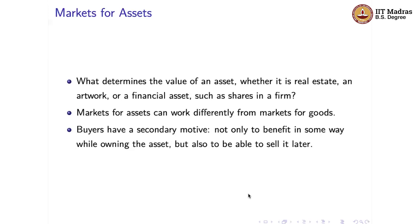This secondary motive is that not only is there some direct benefit from owning the asset, but buyers also often want to sell it later. For example, one purpose of buying real estate is that you want to use the house to stay in, but another objective is that after some point you might want to sell it at a higher price. Similarly, you might enjoy having an artwork around you but also want to sell it at a later time. You might enjoy dividends from owning a share but also want to sell it at some point in the future.